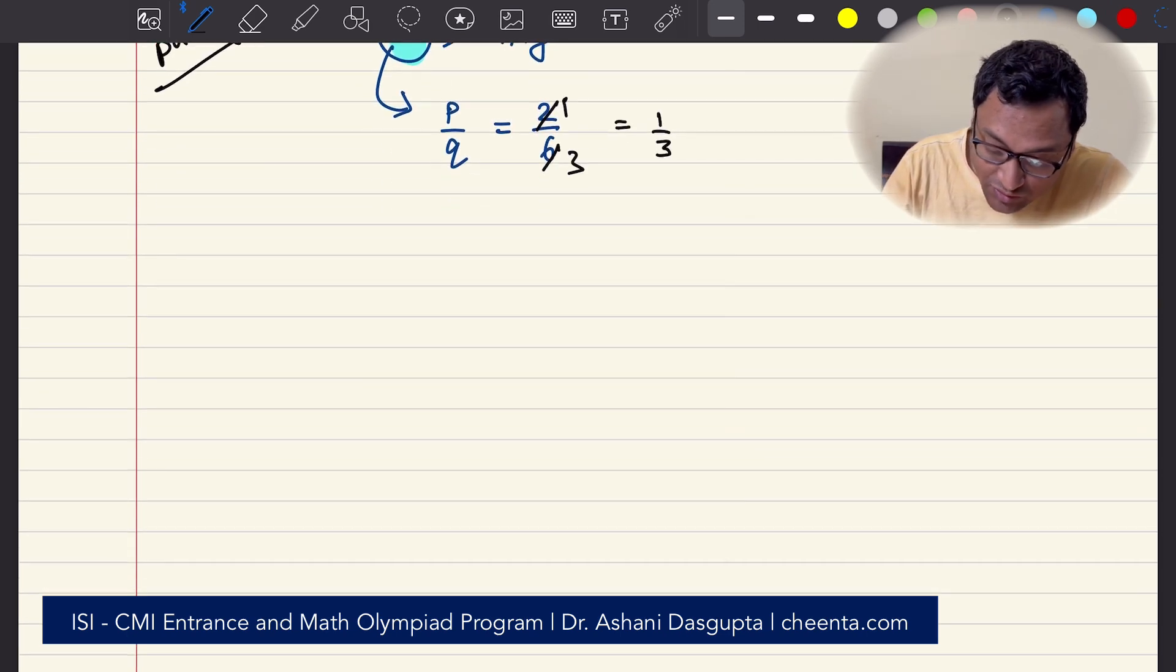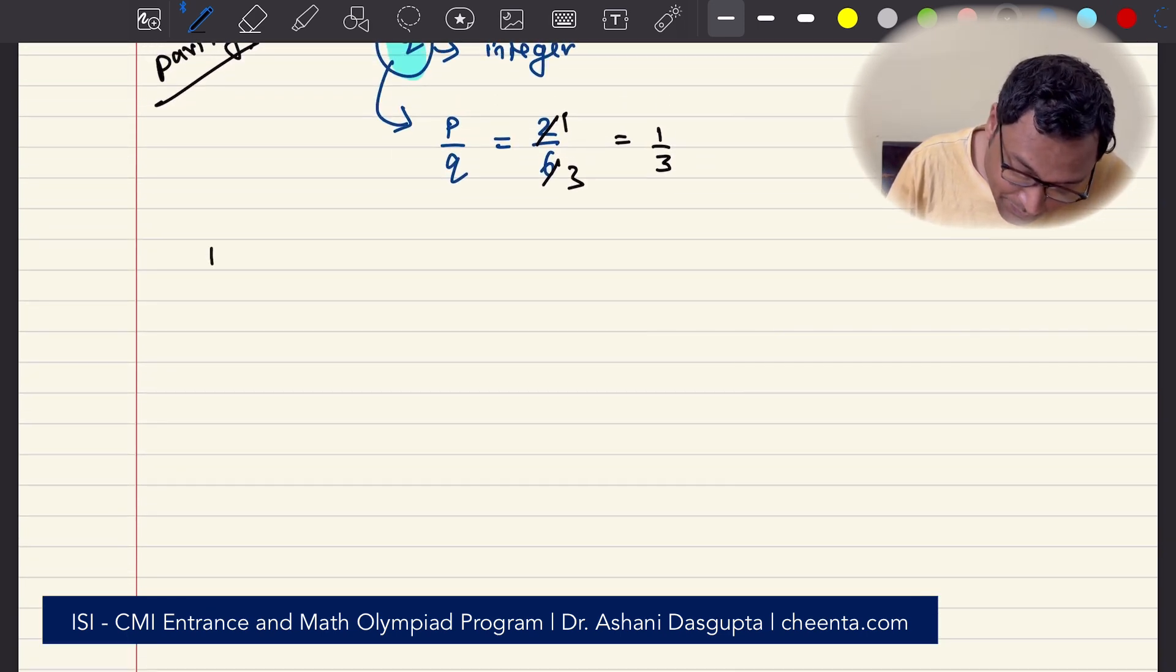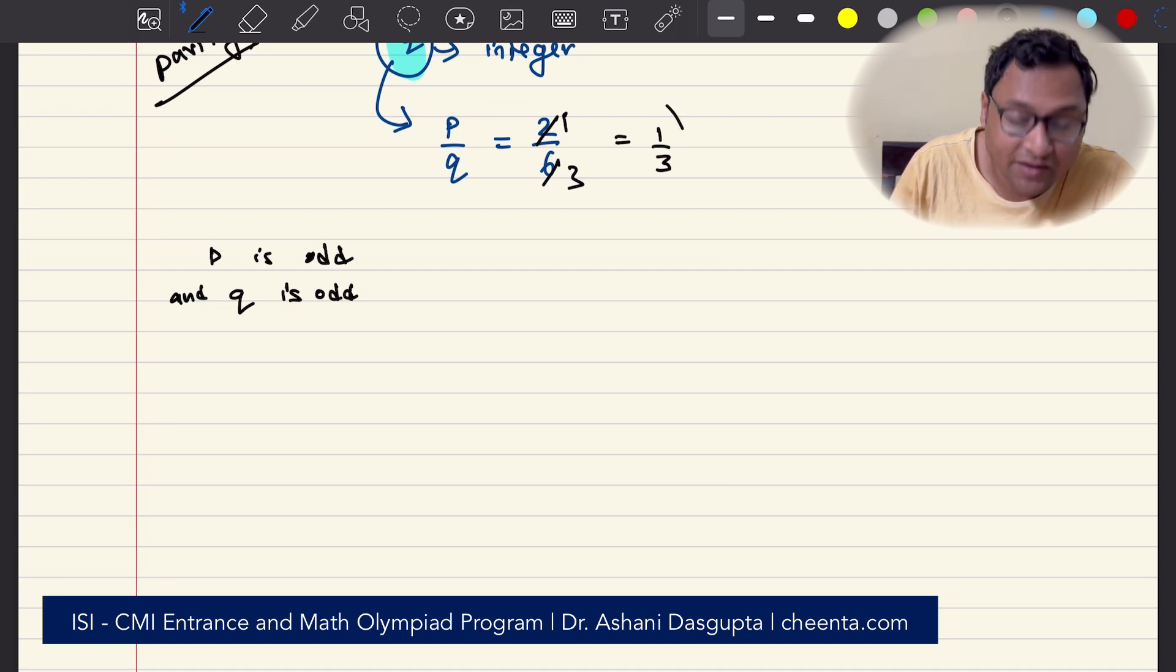We have actually two different cases. P is odd and Q is odd, so this is the odd by odd scenario, or P is odd, Q is even.